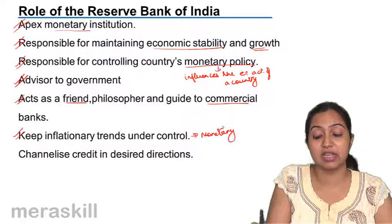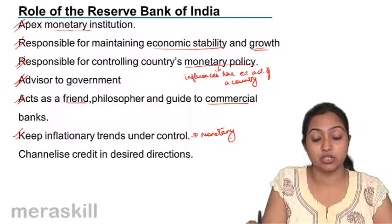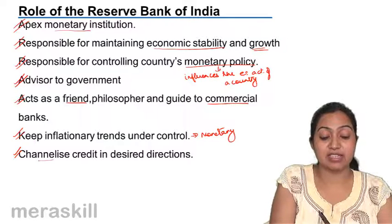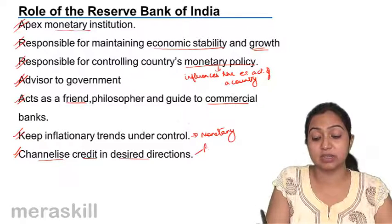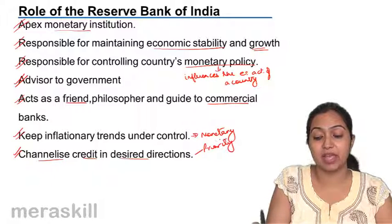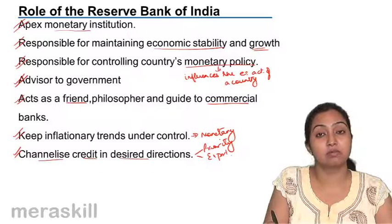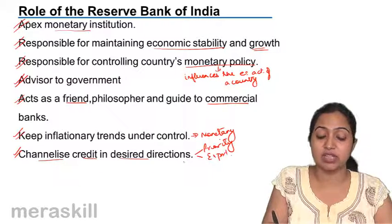It controls credit and tries to keep inflationary trends under control. It also channelizes credit into the desired direction — if money is needed for a priority sector, for exports, or wherever it is required, they channelize the credit in those directions for the benefit of the country.